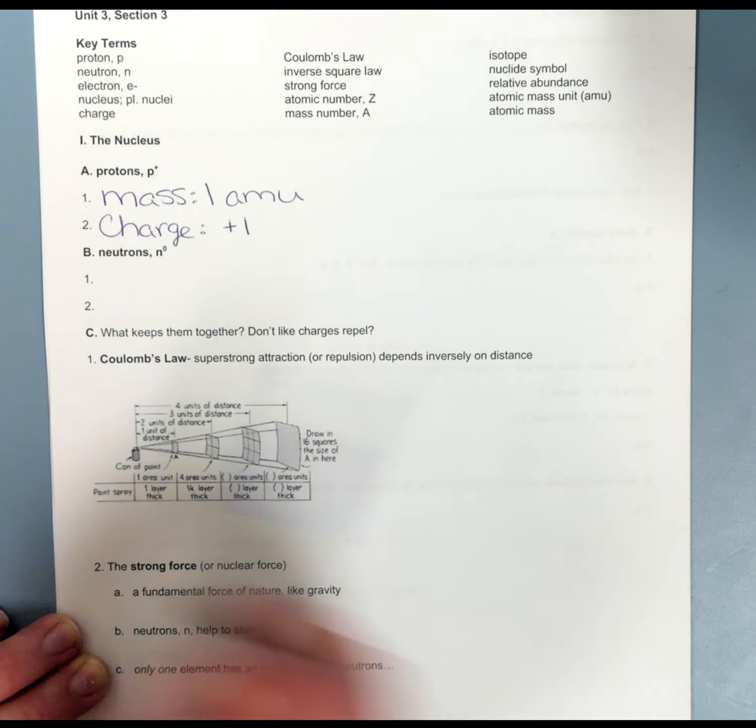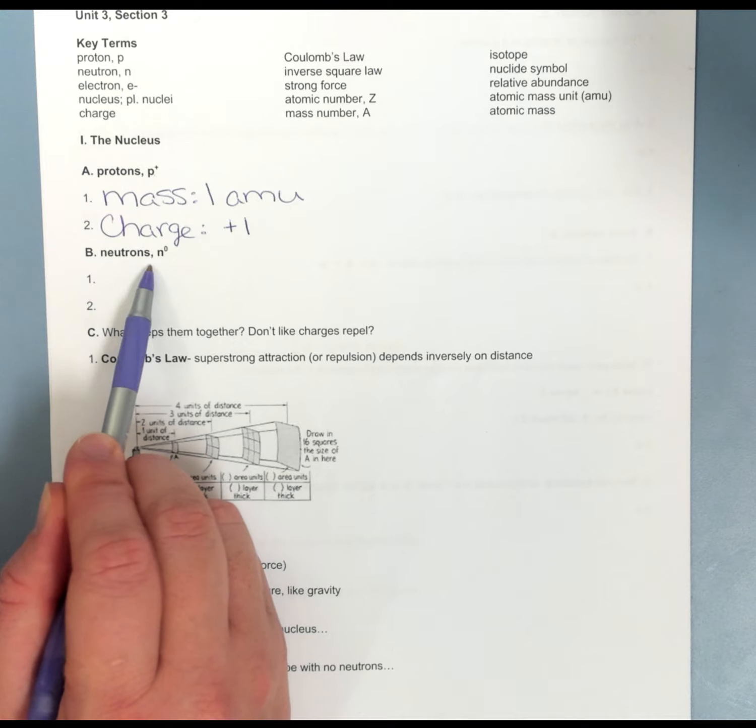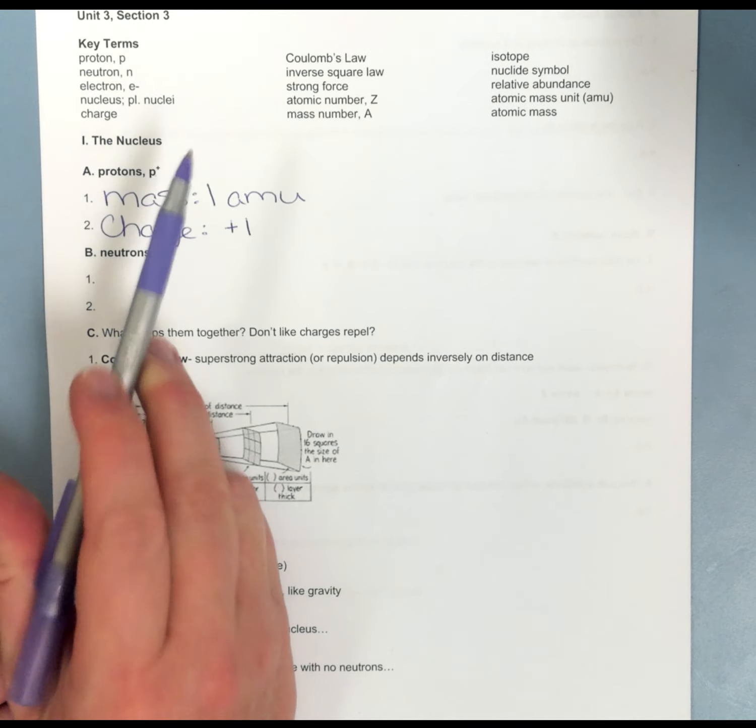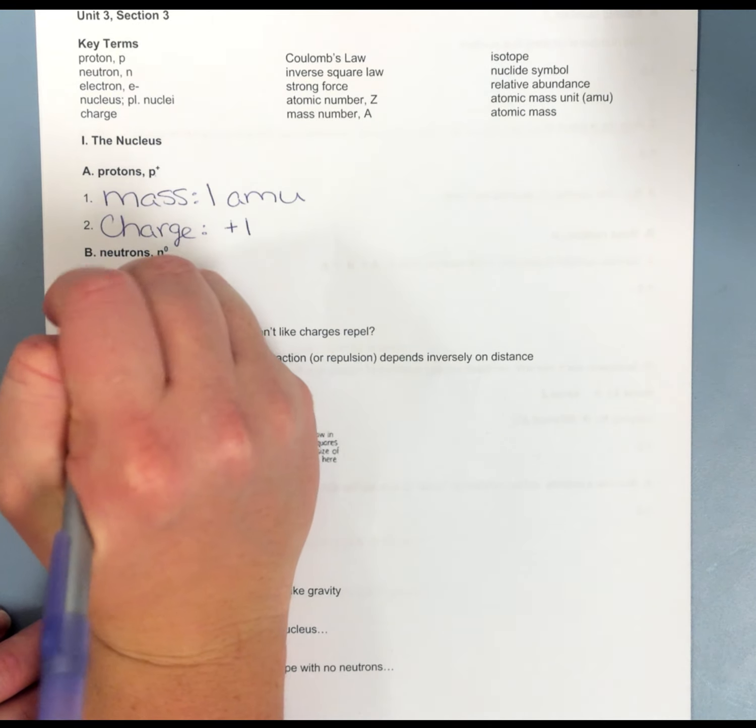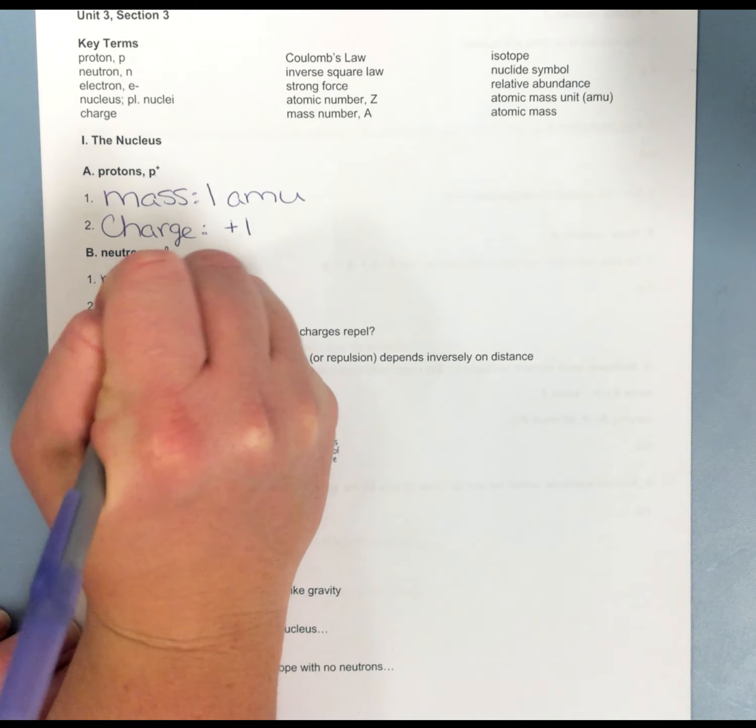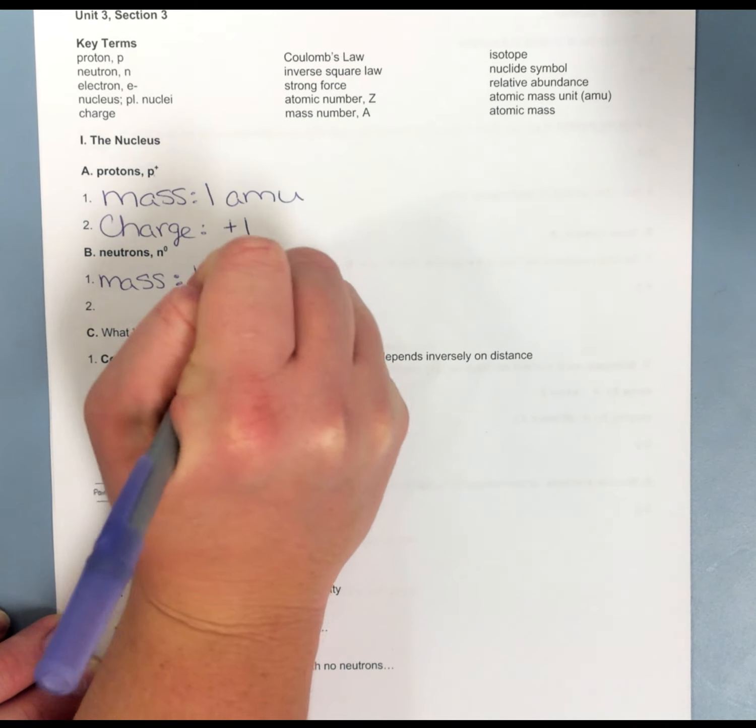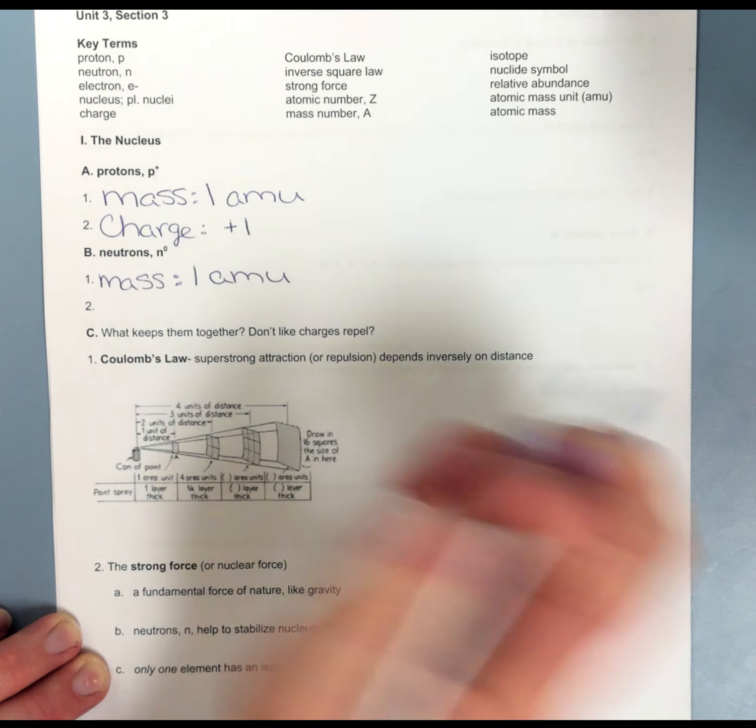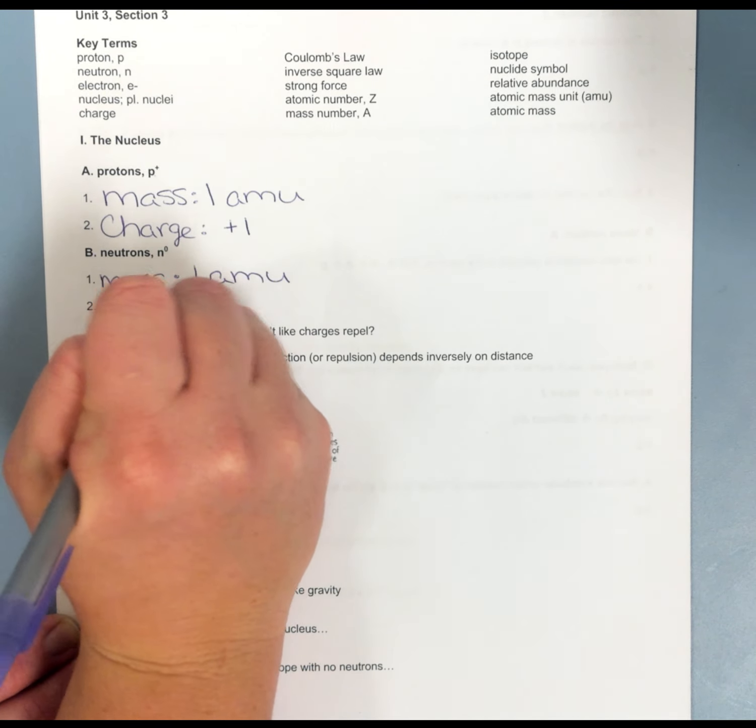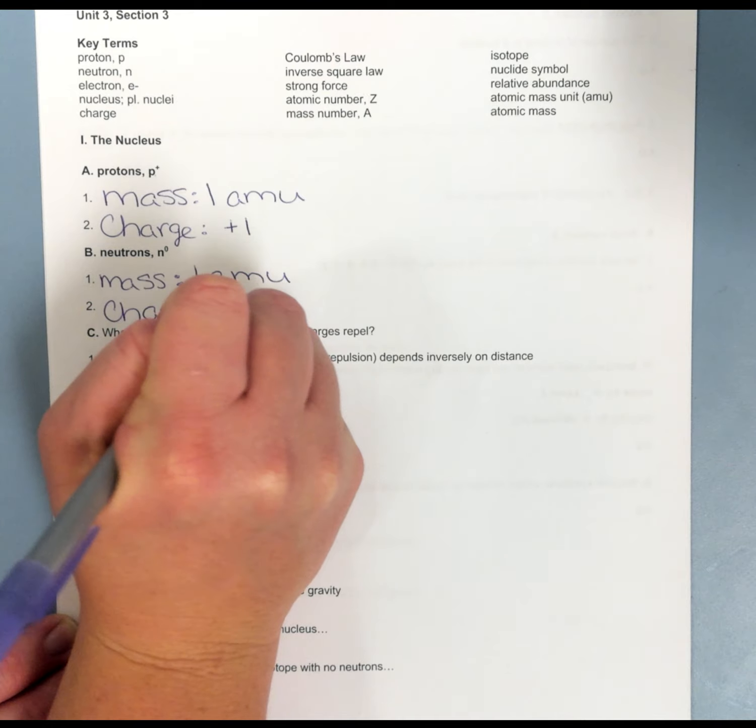Neutrons are my neutral particle in the nucleus. Neutrons, much like the proton, have a mass of one amu, or Atomic Mass Unit. But neutrons have no charge. They have a charge of zero.